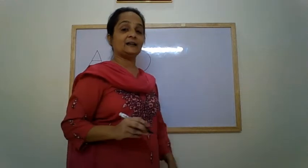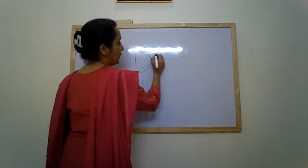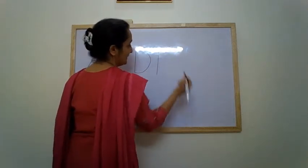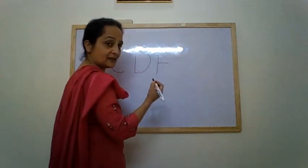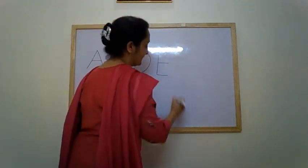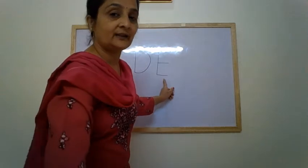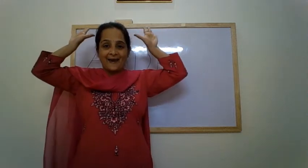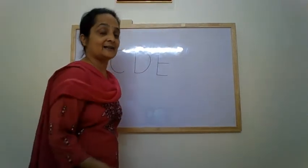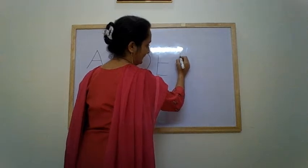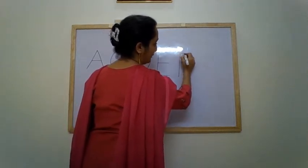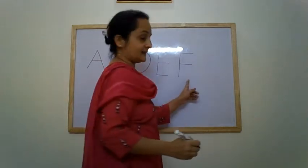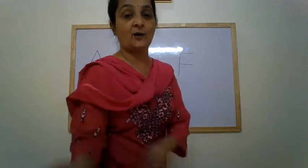Next is letter E: one standing line, sleeping line on top, sleeping line in the middle, sleeping line at the bottom — letter E. E makes the sound E. Next is letter F: standing line, sleeping line on top, sleeping line in the middle — letter F. F makes the sound F.